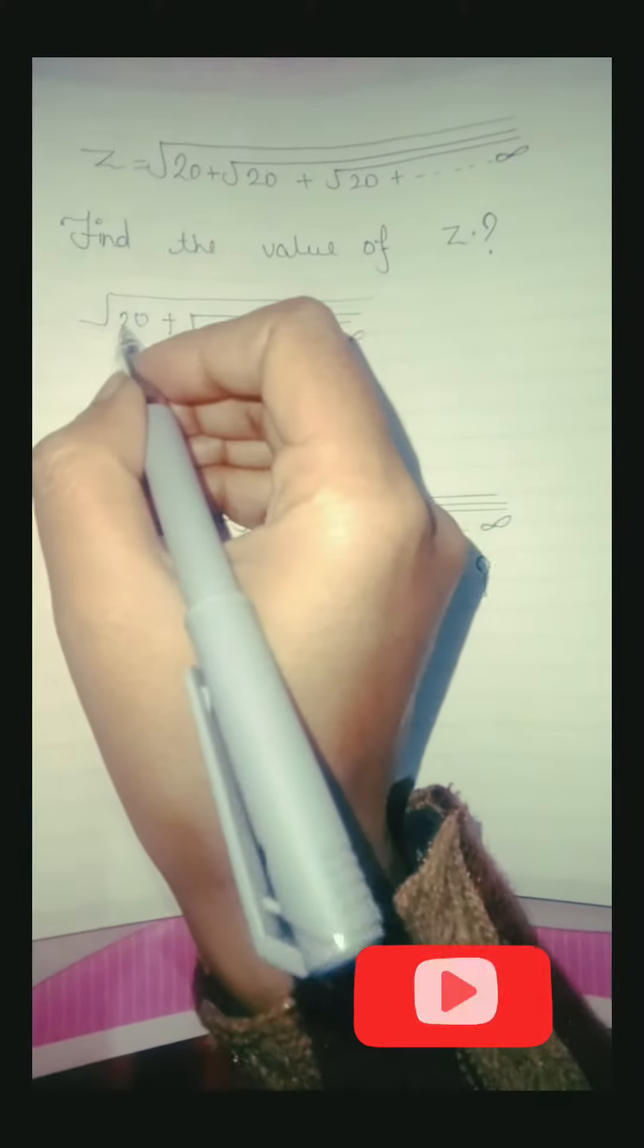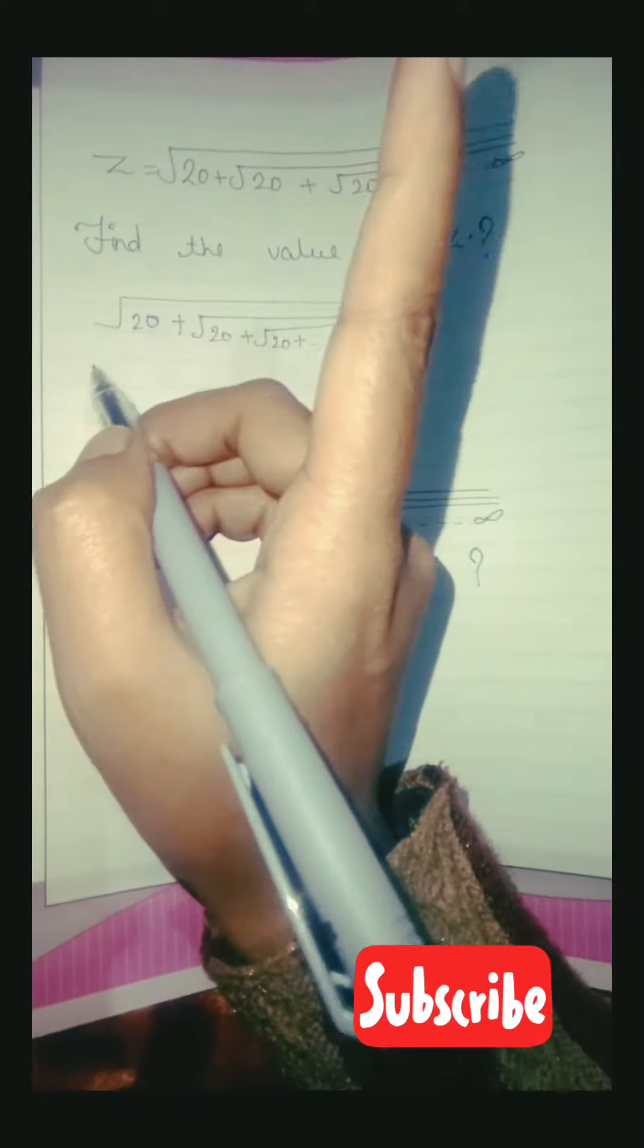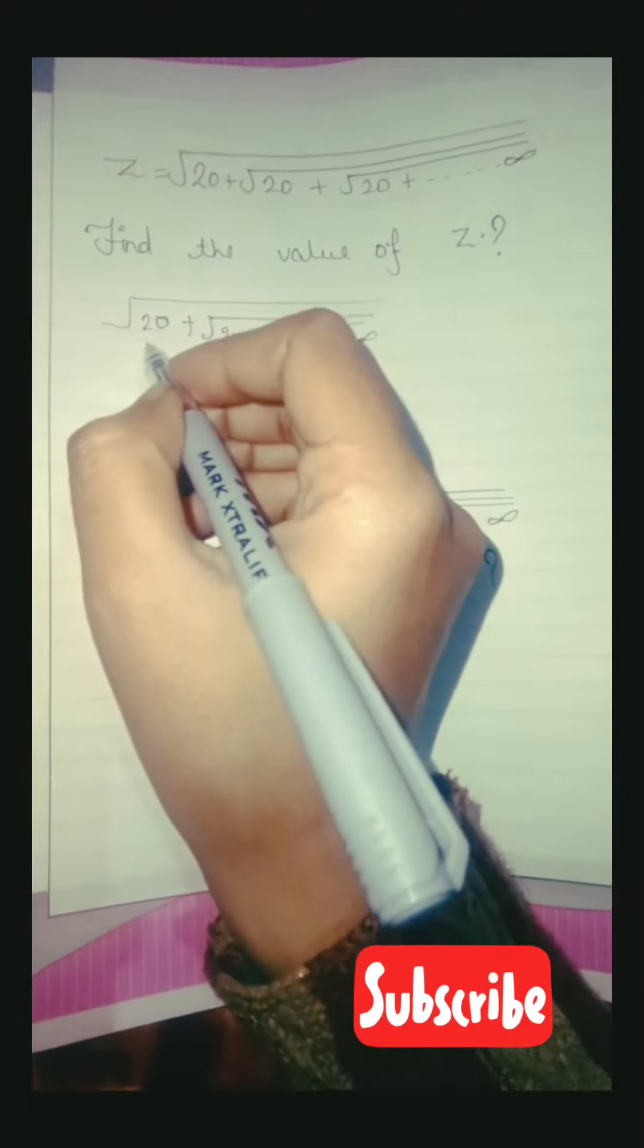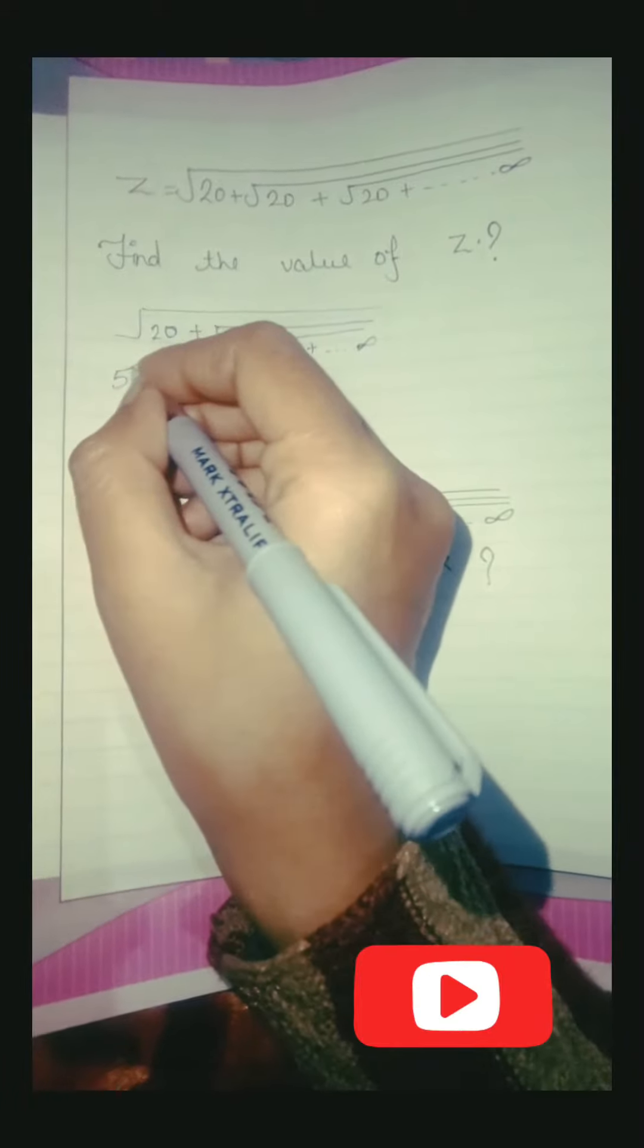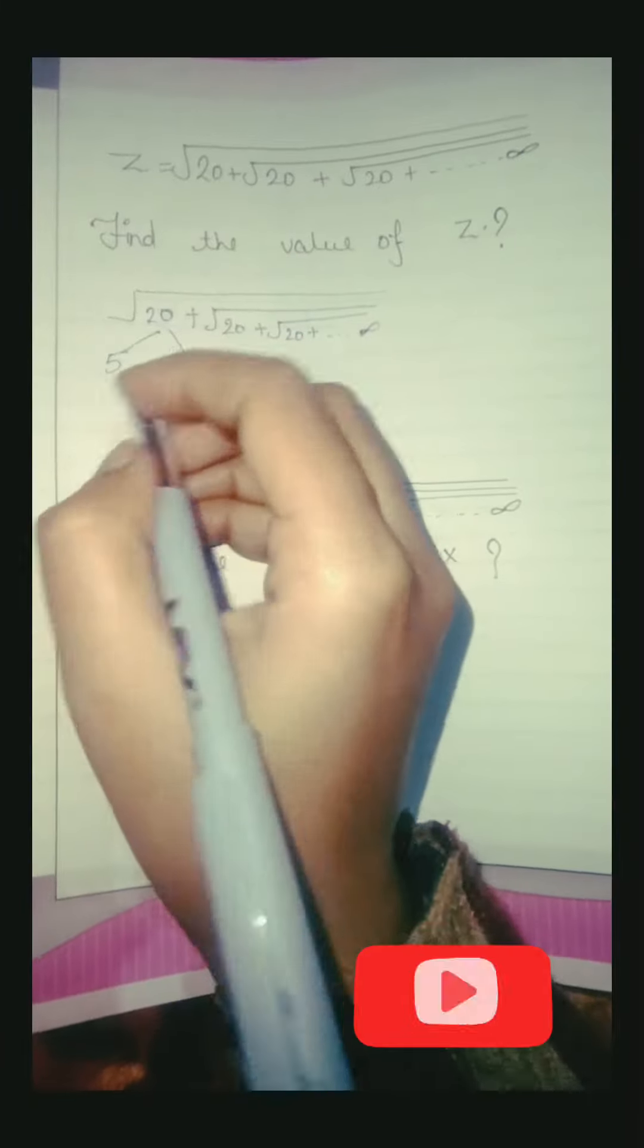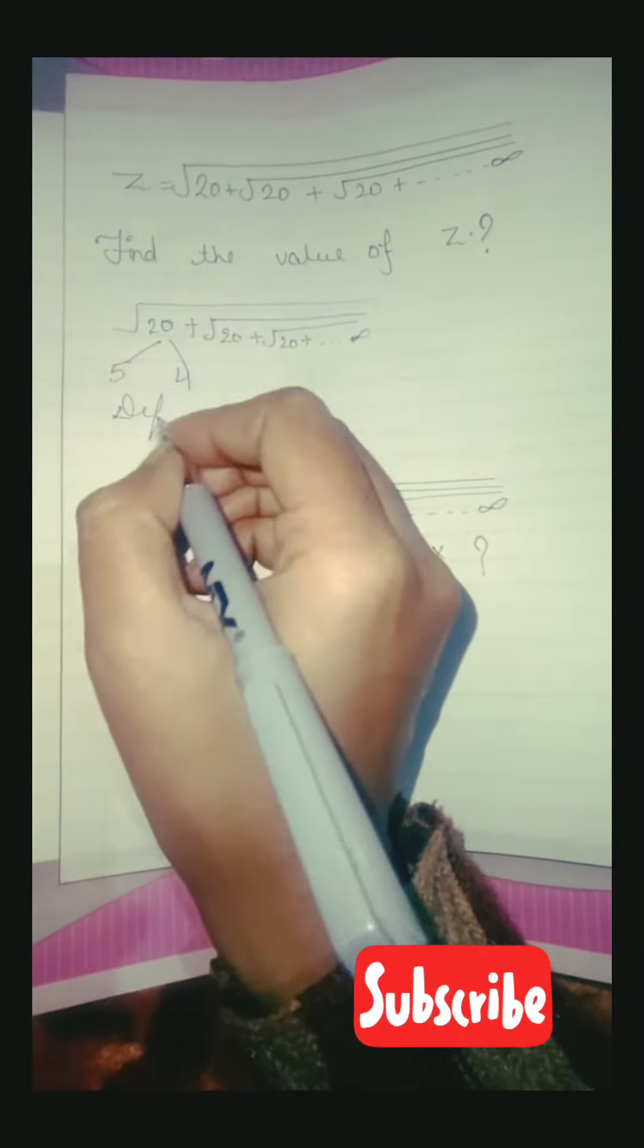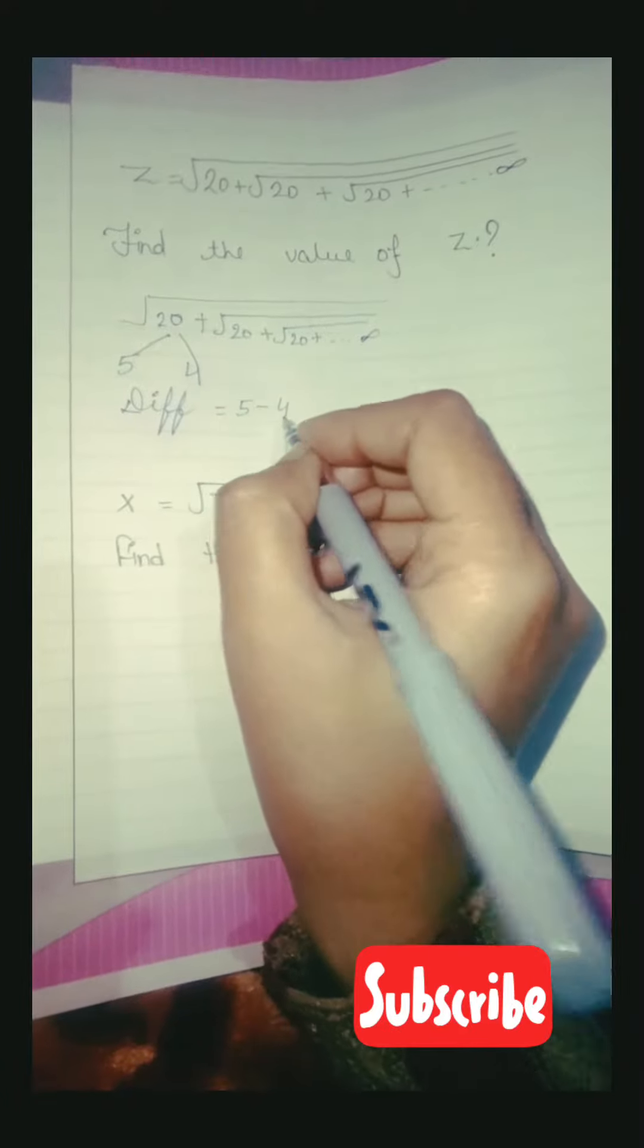Now what will we do? We have to factor 20 such that there should be a difference of 1 between the two factors. The factors are 4 and 5, and the difference is 5 minus 4 equals 1. So our question is correct.